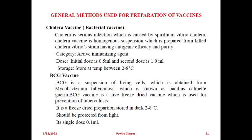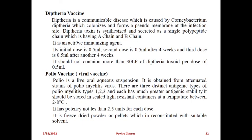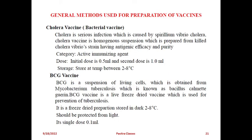Next are vaccines. Several vaccine preparations are covered in this syllabus: cholera vaccine, BCG vaccine, polio, and tetanus vaccines. Cholera vaccine is a bacterial vaccine. Cholera is a serious infection caused by Vibrio cholerae. The cholera vaccine is a homogeneous suspension prepared from killed Vibrio strain - this is a killed vaccine, with antigen efficacy and purity. It is an active immunizing agent. Initial dose is 0.5 ml, second dose is 1 ml. Storage temperature is 2 to 8 degrees Celsius.